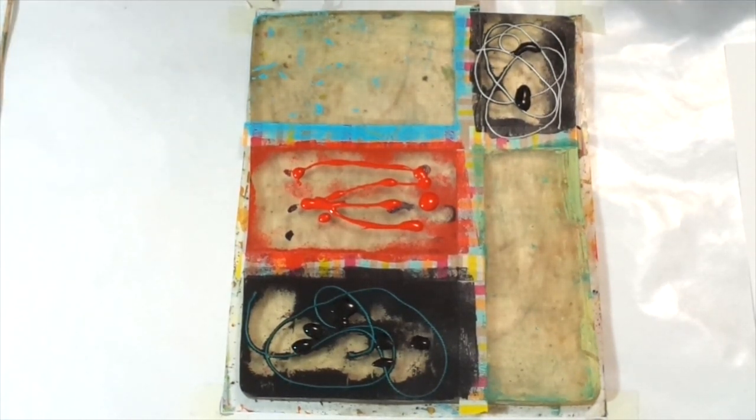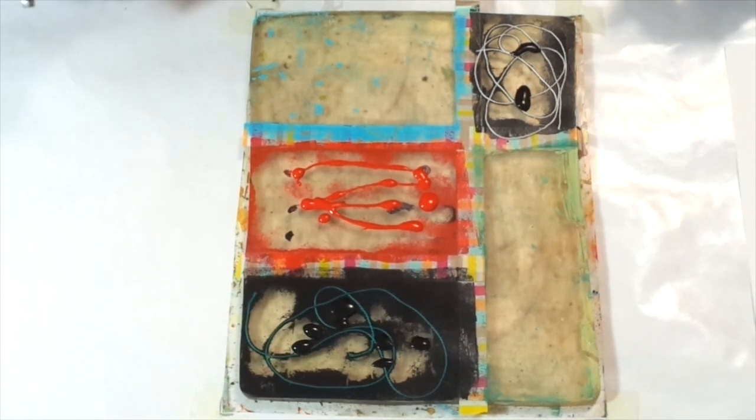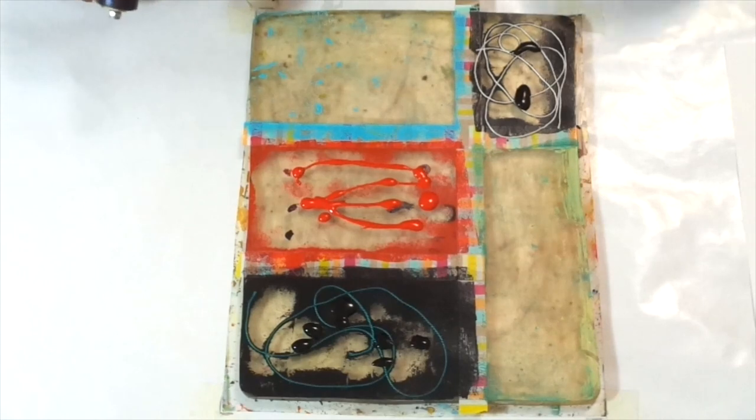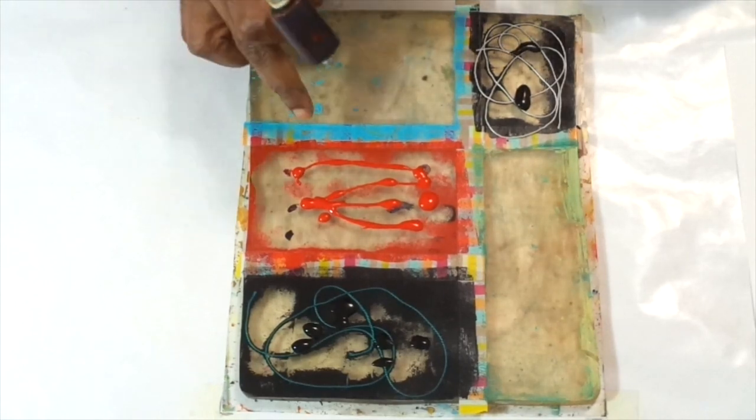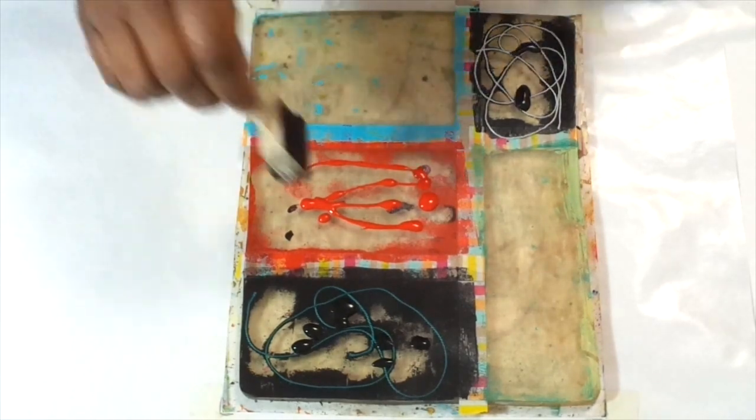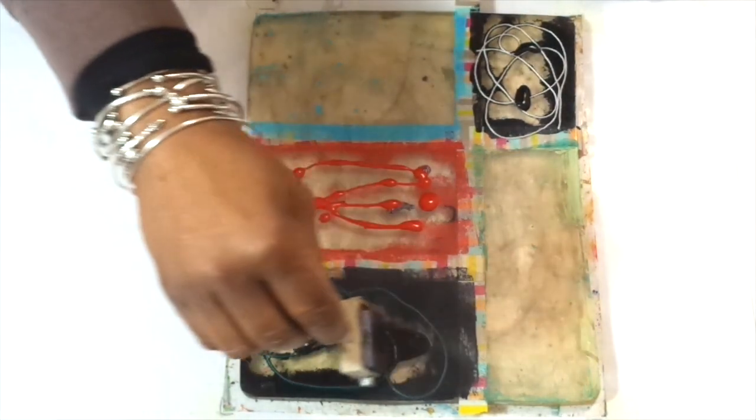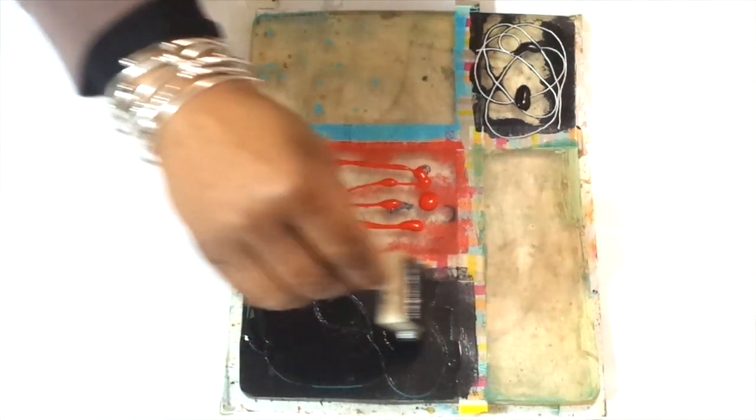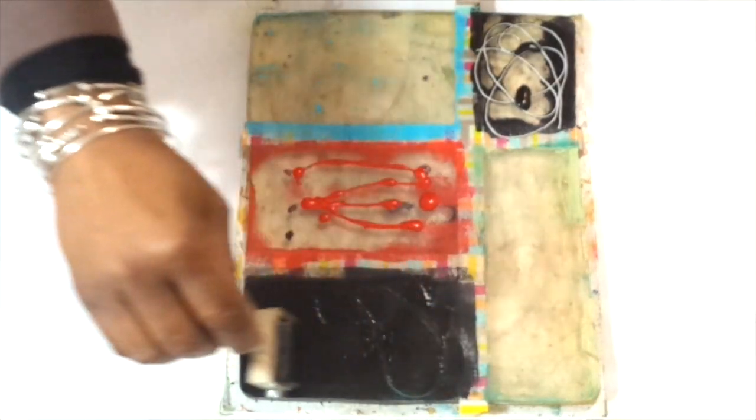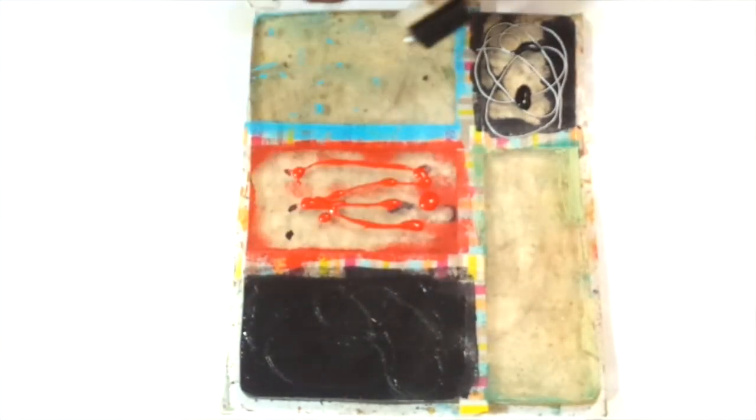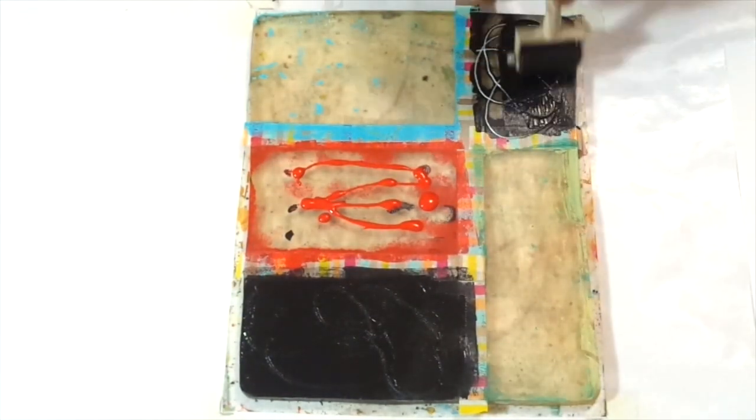So here I have my 8x10 gel plate working with golden fluid acrylics. I have used some washi tape to section off my plate. As you can see, I already started. I have some thread and that's being covered in black, carbon black.